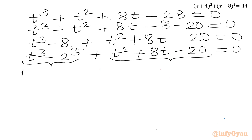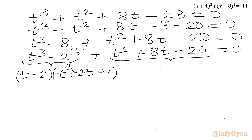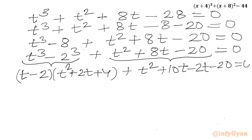We split t³ − 8 using the a³ − b³ formula, giving (t − 2)(t² + 2t + 4). And we are left with the remaining quadratic expression t² + 8t − 20.